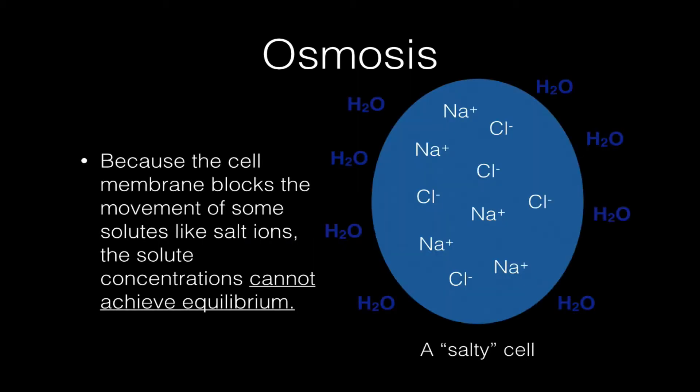Because the cell membrane blocks the movement of some solutes, like salt ions, the solute concentrations cannot achieve equilibrium. Remember, if this was plain old diffusion, the sodium and chlorine ions would diffuse out of the cell.